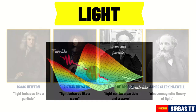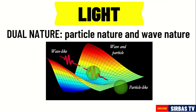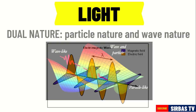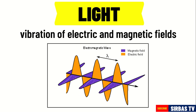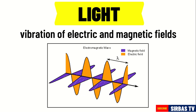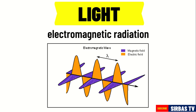Light is now considered to have a dual nature. It behaves as tiny particles called photons and it also behaves as a wave. Light is formed by the vibration of electric and magnetic fields. Therefore, it is a form of electromagnetic radiation.